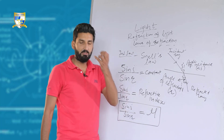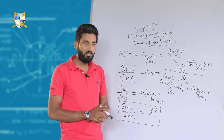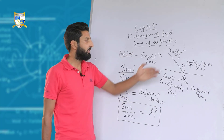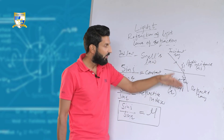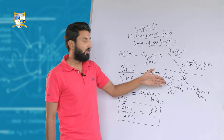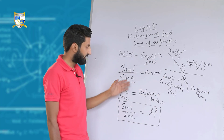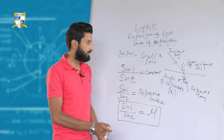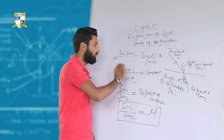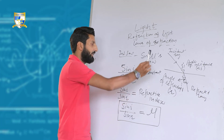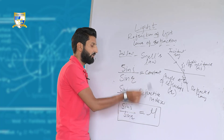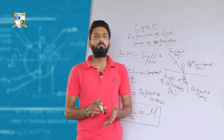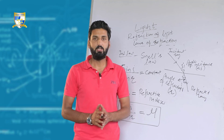What exactly is the concept behind Snell's law? The law gives a relation between angle of incidence and angle of refraction, and the ratio of the sine values of these two angles gives us a constant known as the refractive index. We will discuss the concept of refractive index in the next lecture. Thank you.